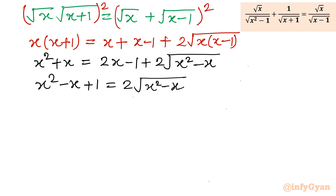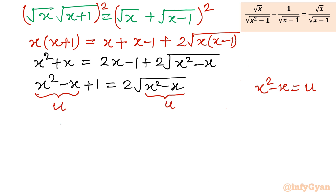Now we can identify that if we substitute u = x² minus x, the equation becomes u + 1 equals 2·square root(u). This makes the equation much simpler.